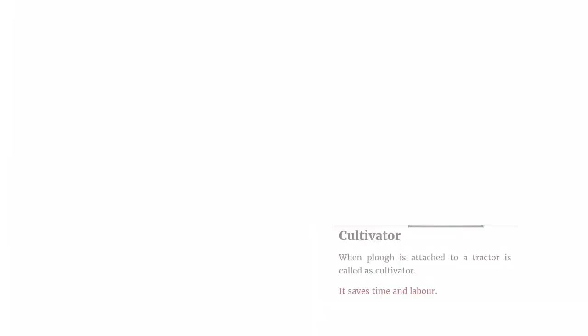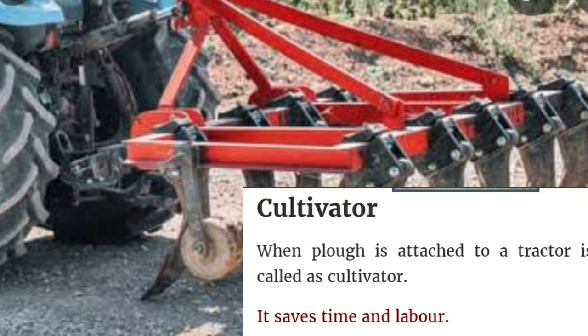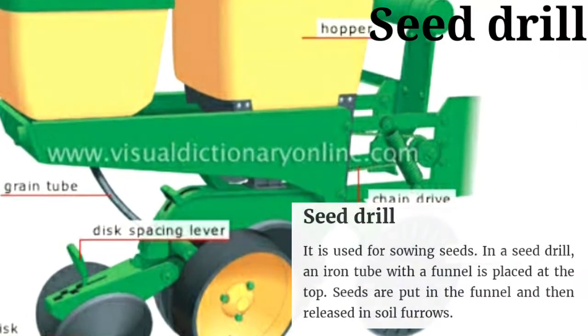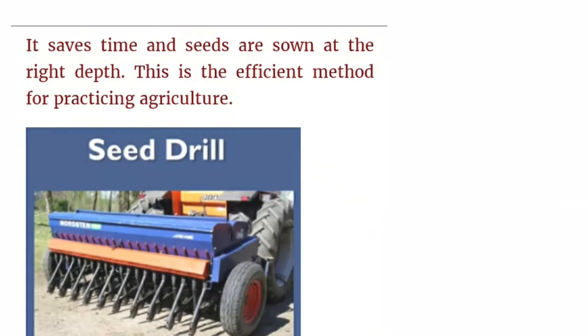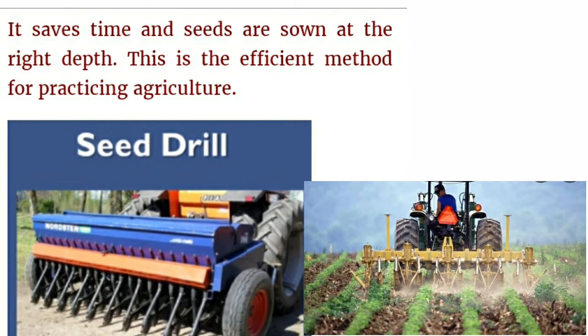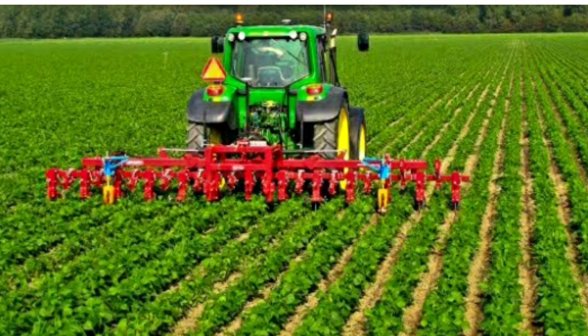The next is the cultivator — when a plow is attached to a tractor, it is called a cultivator. This helps to save time and labor. Next is the seed drill, which is used for sowing seeds. In a seed drill, an iron tube with a funnel is placed at the top; seeds are put in the funnel and then released into soil furrows. The seed drill saves time, ensures seeds are sown at the right depth, and is an efficient method for practicing agriculture.